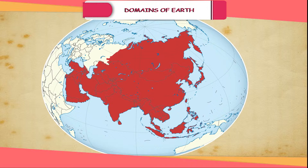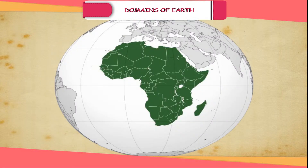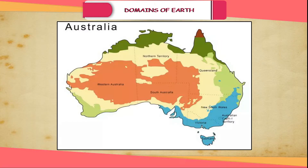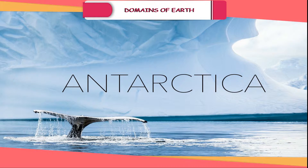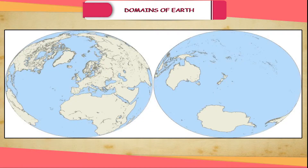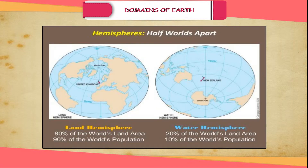Continents. There are seven major continents, namely Asia, Africa, Europe, Australia, North America, South America and Antarctica. Looking at the map of the world (figure 7.1), notice that the greater part of the land masses lies in the Northern Hemisphere, which is called the Land Hemisphere. Most of the Southern Hemisphere is covered by oceans and seas, and this hemisphere is called the Water Hemisphere.